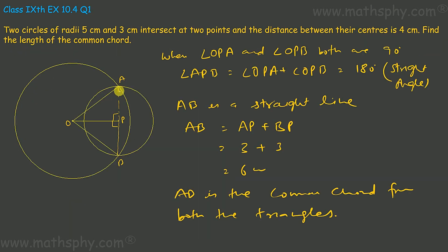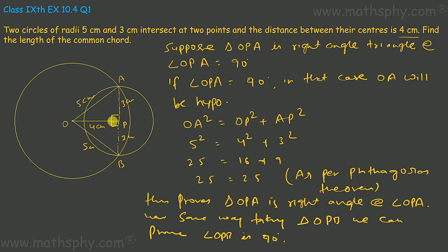AB is the common chord for both the circles, and as per the theorem we know that the line joining the centers of two circles will be the perpendicular bisector of the line joining the points of intersection of both circles. Here AB joins the points of intersection A and B, and OP is the line joining the centers of the bigger circle and smaller circle. So OP will be the perpendicular bisector of AB. We have also proved that angles OPA and OPB are both 90 degrees, and AP and BP are equal, meaning OP is bisecting AB. If you try to solve this question without proving OP as perpendicular from the given information, this question will not be solved.